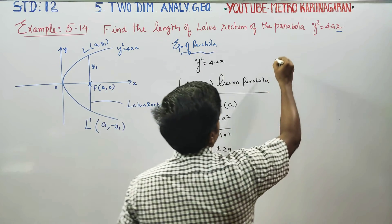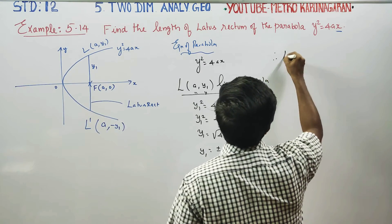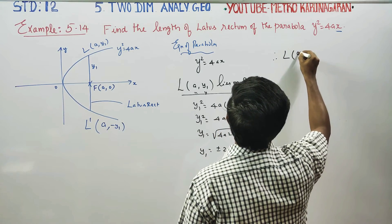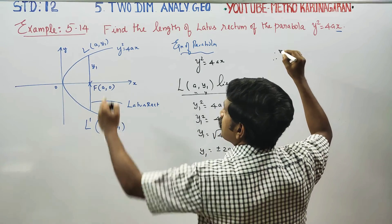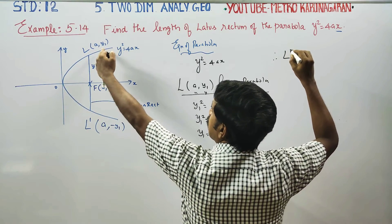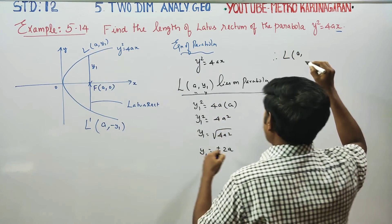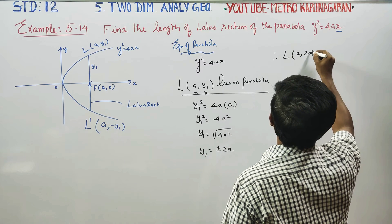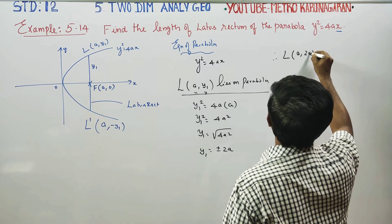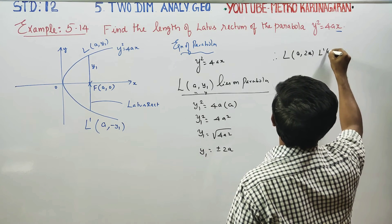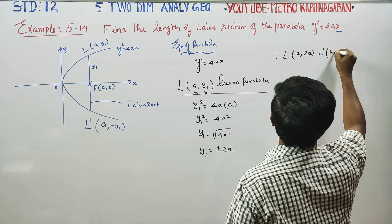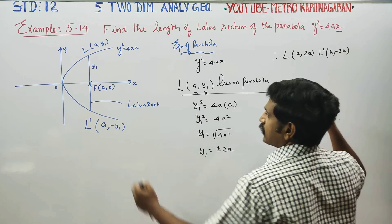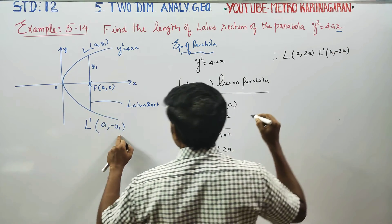Therefore, point L is (a, 2a) and point L' is (a, −2a).